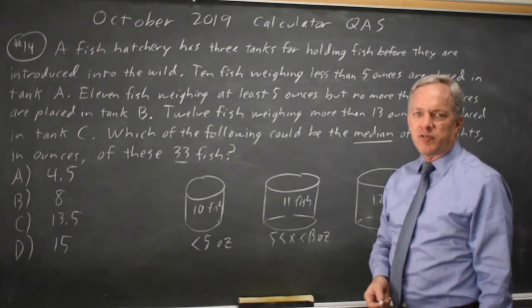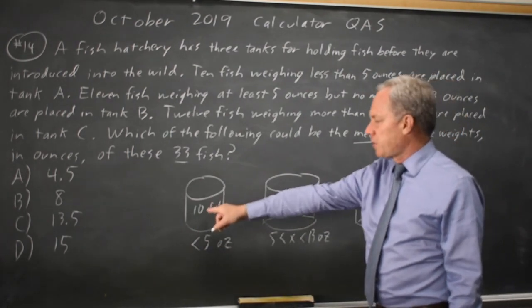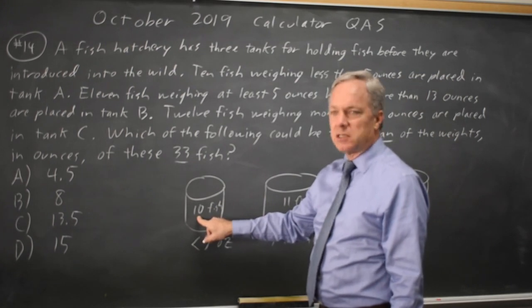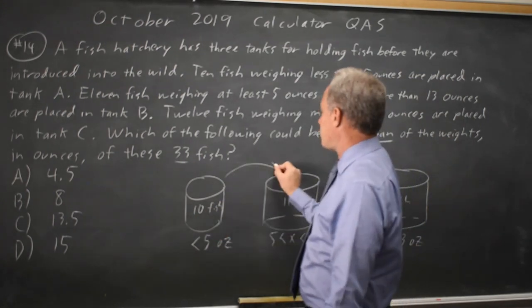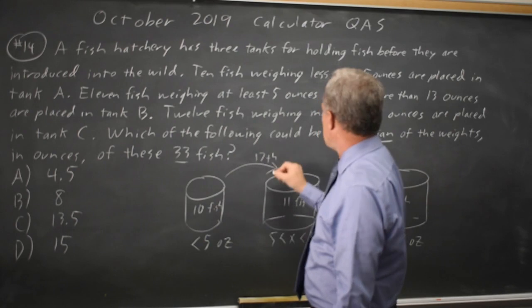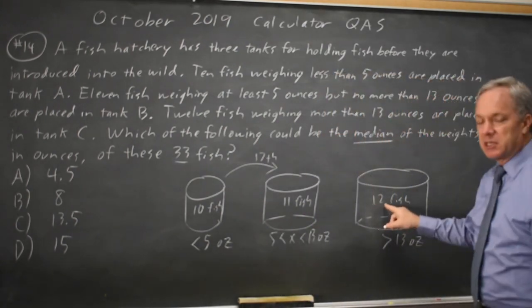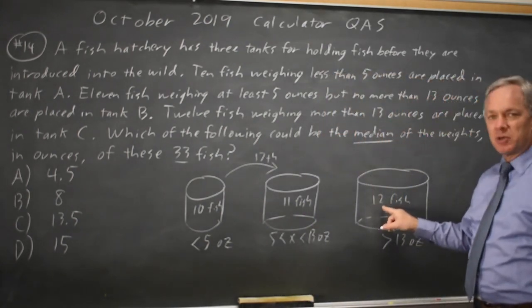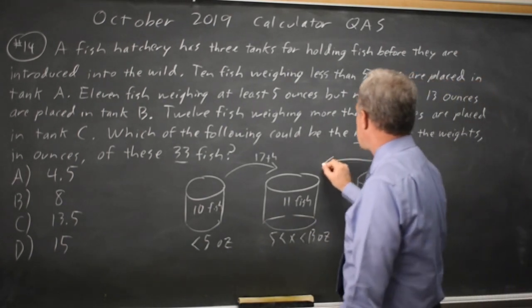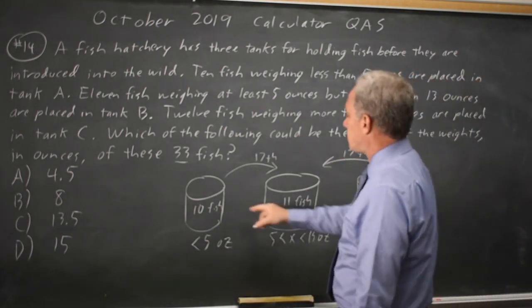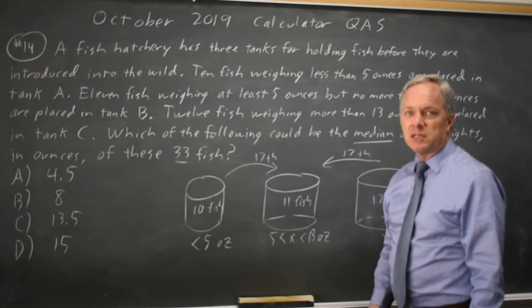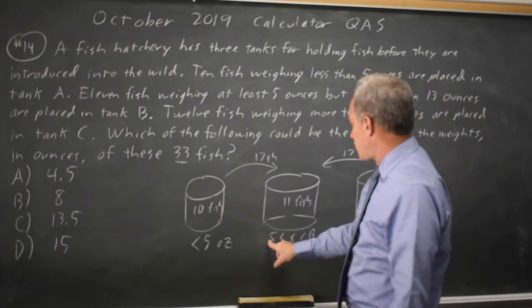And the 17th fish from the smallest can't be in this tank, there's only 10 in this tank. So the 17th would have to be over here. And the 17th from the largest can't be in this tank because only 12 fish are in this tank. So the 17th has to be to the left of the large tank, to the right of the small tank. The 17th fish has to be in this middle tank.